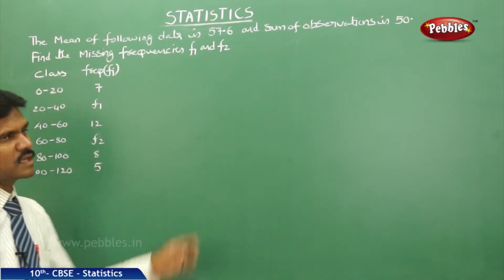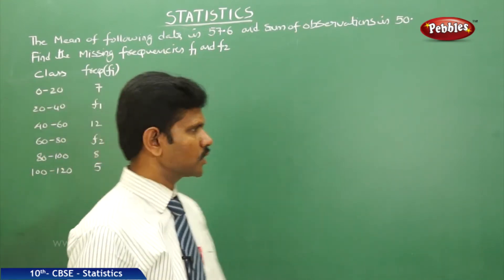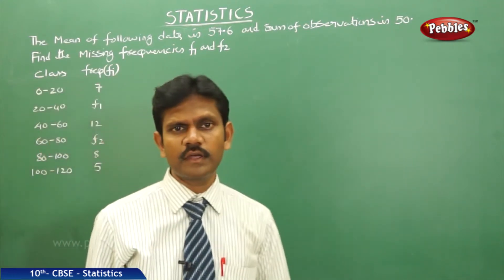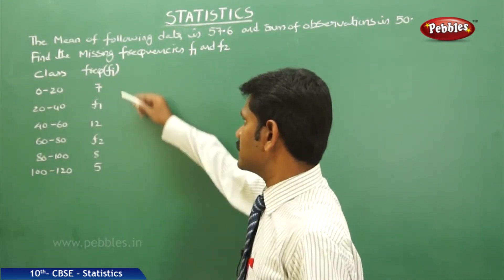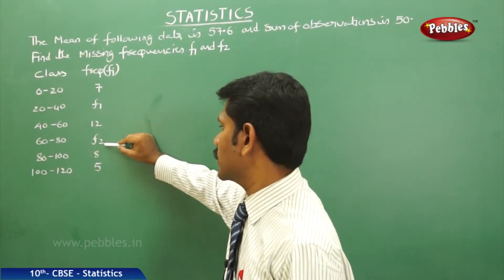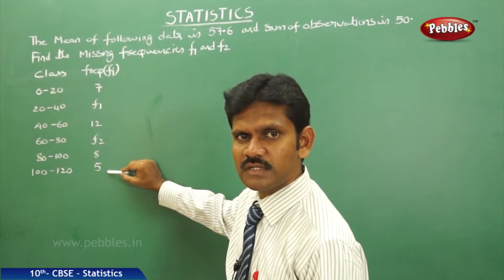Find the missing frequencies F1 and F2. Now, the data is given like this. Classes from 0 to 20 is the starting class and the ending class is 100 to 120. The frequencies are given 7, F1, 12, F2, 8, 5. These are the frequencies.